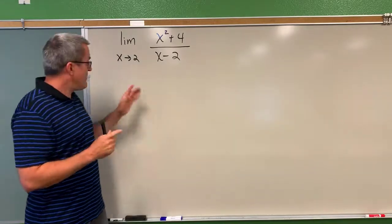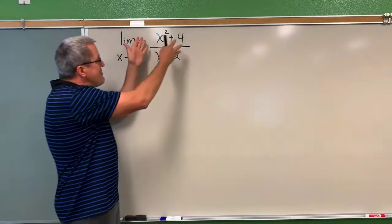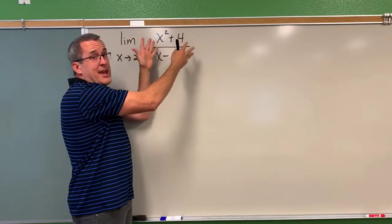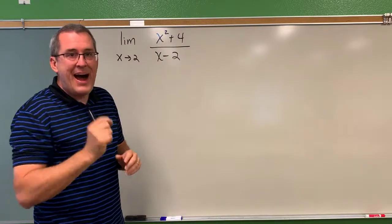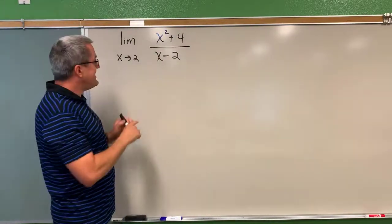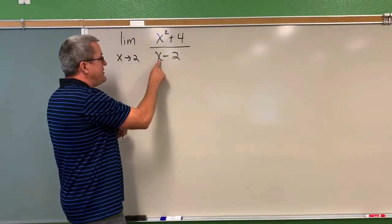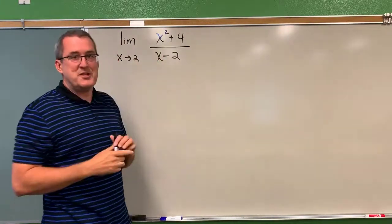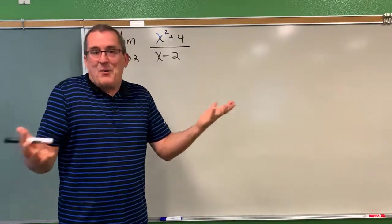So first remember that this limit idea is saying examine the behavior, the output behavior of this function for input values nearby to 2 but not equal to 2. Again the reason I say that is because if x was indeed equal to 2 the denominator would say 2 minus 2 which is 0, division by 0 is impossible so that's not what we're talking about here.